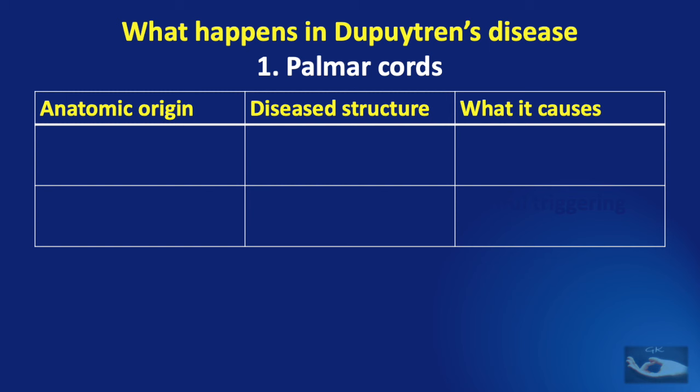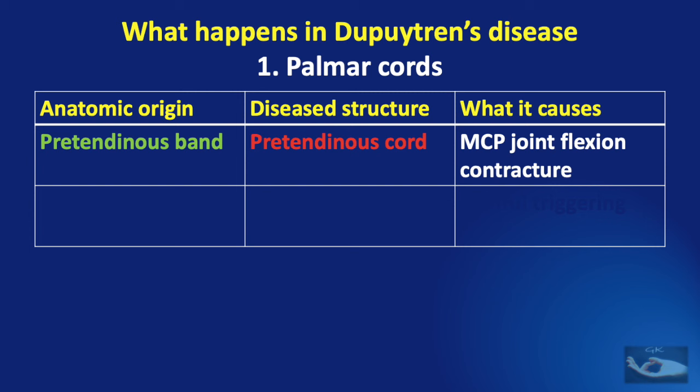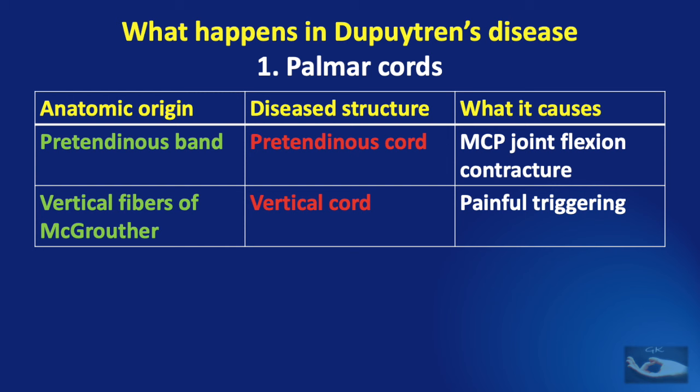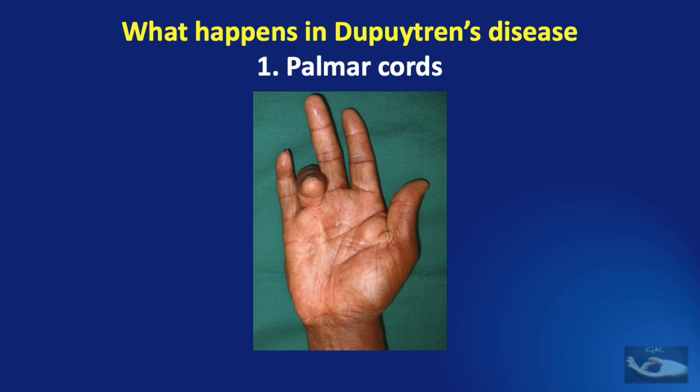In the palm, we have the palmar cords. The pre-tendinous bands get converted to pre-tendinous cords, which result in a metacarpophalangeal joint flexion contracture. The vertical fibres of McGrother, when diseased, become the vertical cords and they cause the triggering effect on the finger flexors. This is a clinical picture showing the effect of palmar cords.